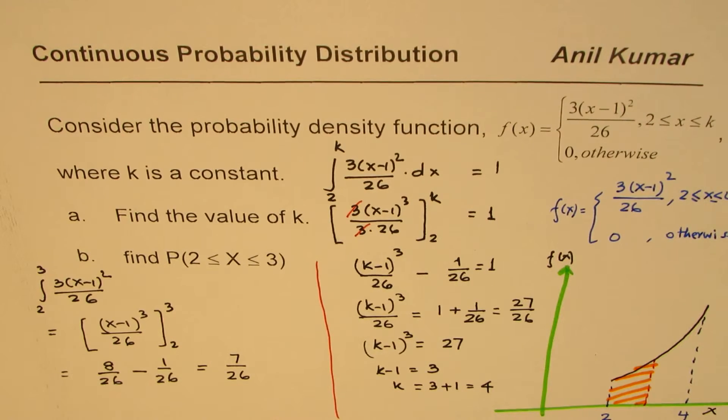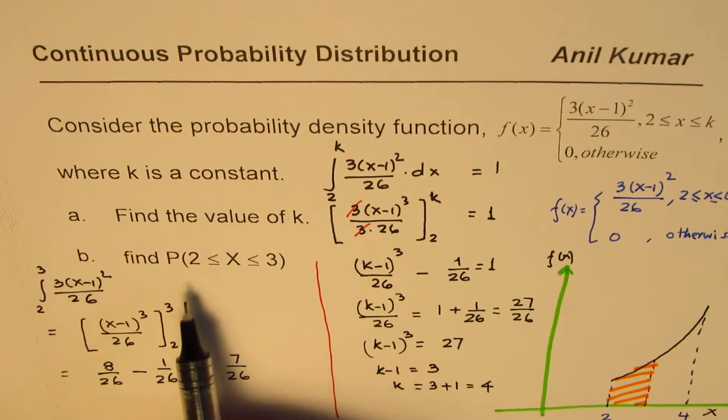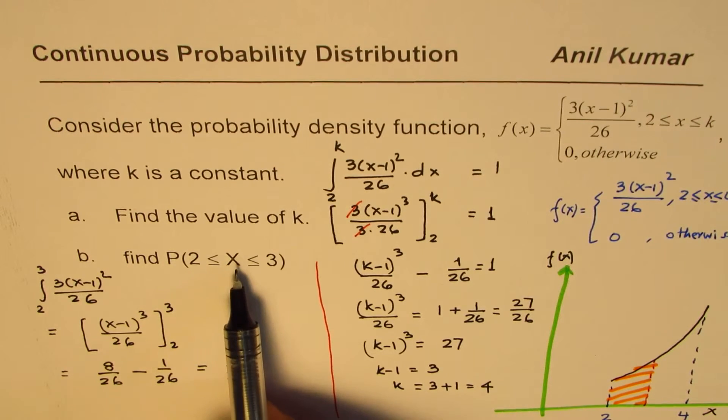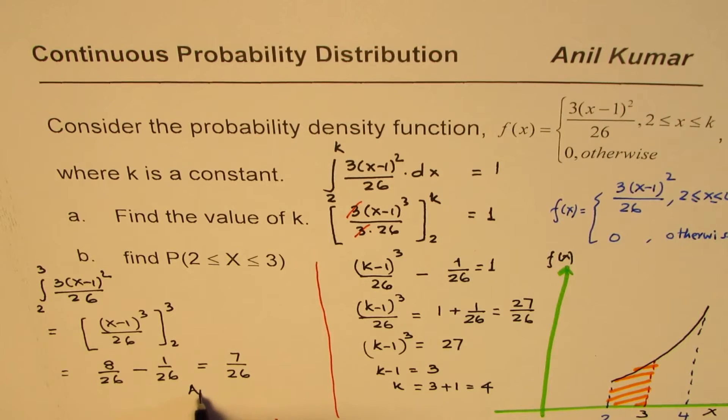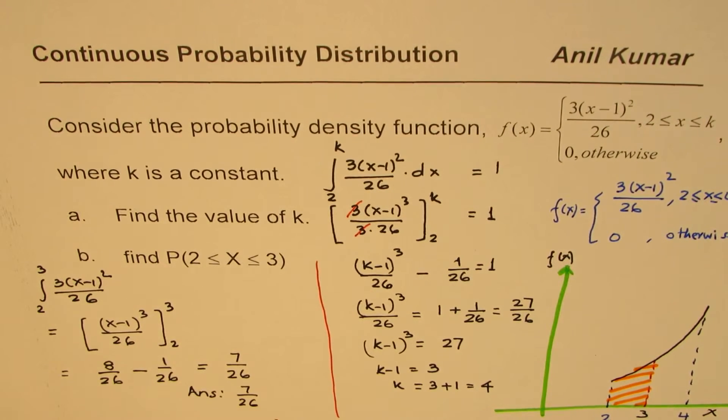So 7 over 26 is the probability for the random variable x to be within this period, from 2 to 3. That is our answer. You can also write this in decimals.